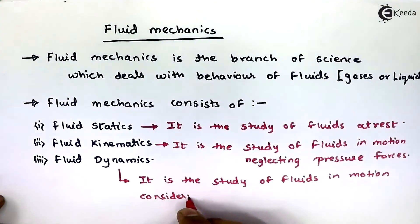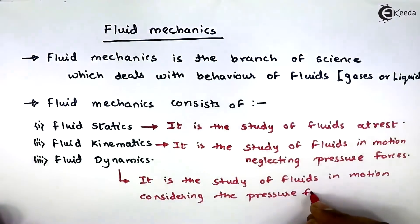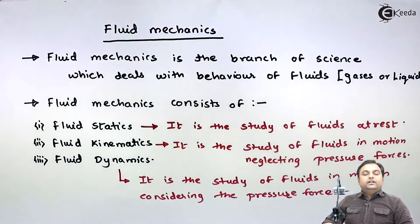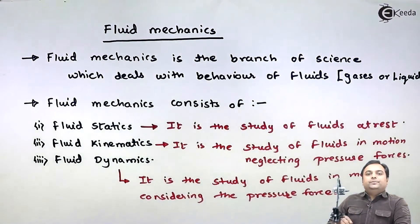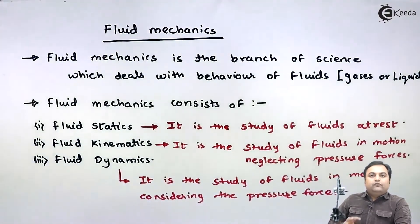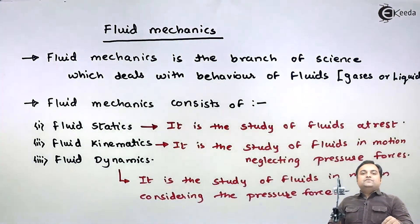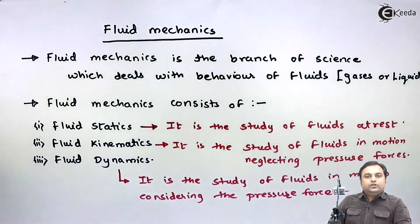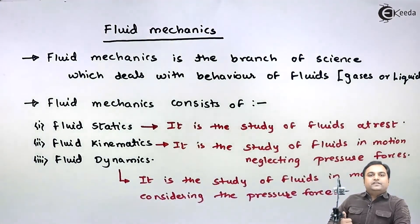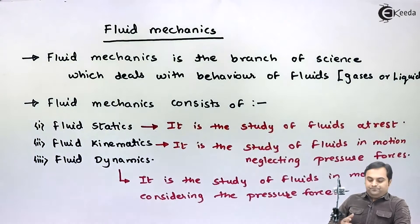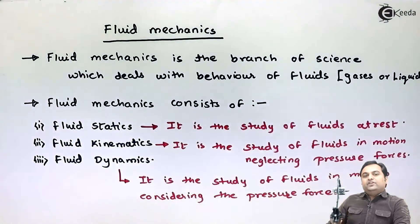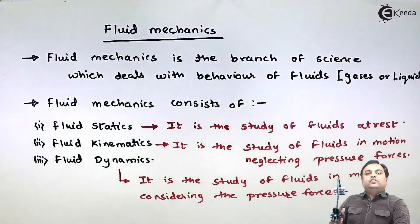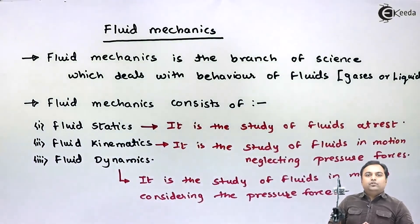So we have seen that fluid mechanics is a branch of science which deals with the behavior of fluids — liquids as well as gases. Fluid mechanics is divided into three parts: fluid statics, fluid kinematics, and fluid dynamics. In fluid statics we study fluids at rest; in fluid kinematics we study fluids in motion neglecting pressure forces; and in fluid dynamics we study fluids in motion considering the pressure forces. This video gave us a brief overview of fluid mechanics with its types.